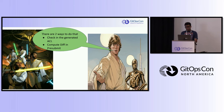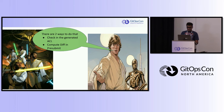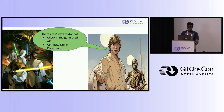However, checking in generated ACLs only works for a small number of ACLs. An alternate option is to compute the diff in pre-submits. The pre-submit system generates the ACL configuration based on proposed changes and compares them with the existing configuration. The computed diff can be presented to the reviewer as a comment within the code review tool or as an external URL. This approach eliminates the need for the author to manually check in generated ACLs and ensures the diff is always up to date.